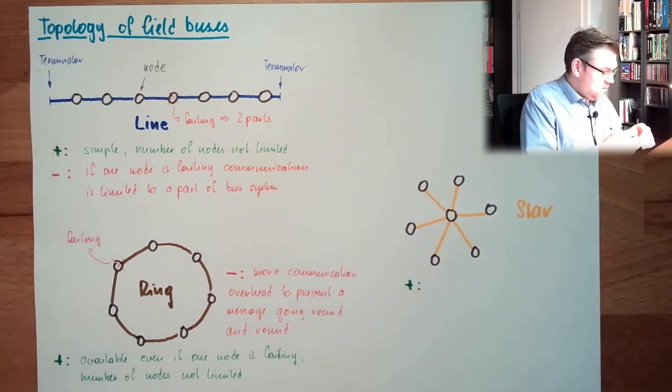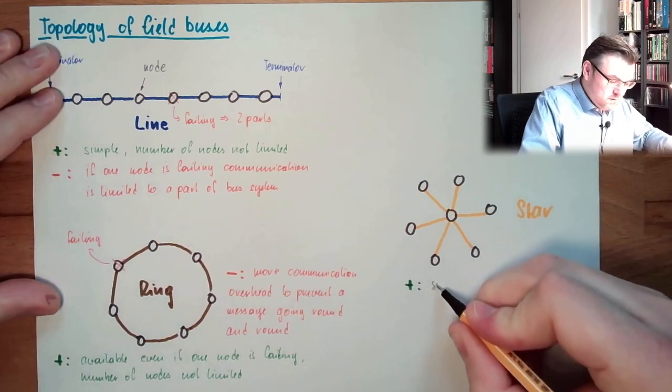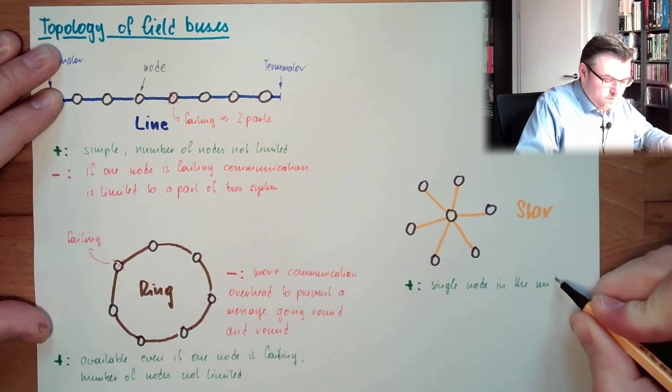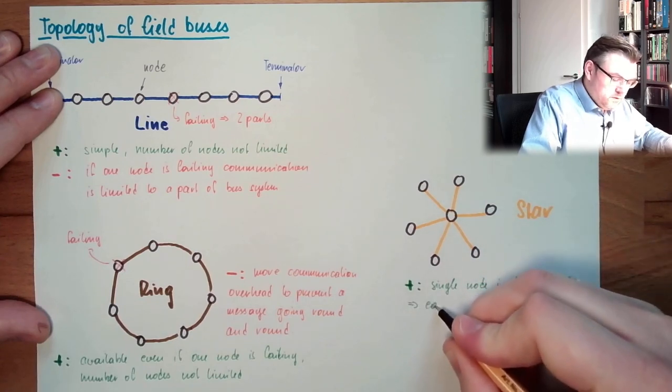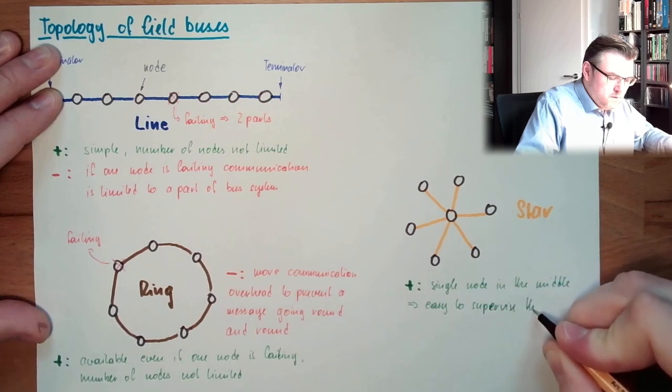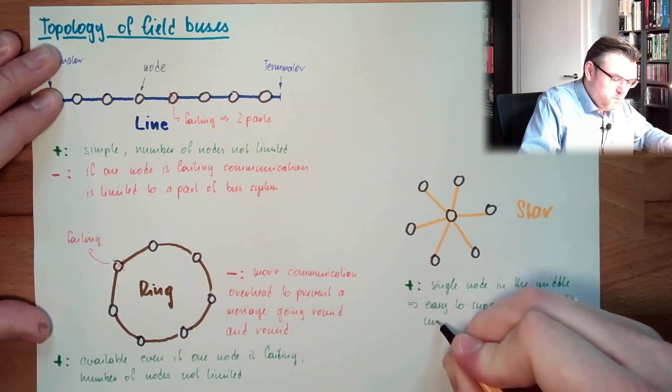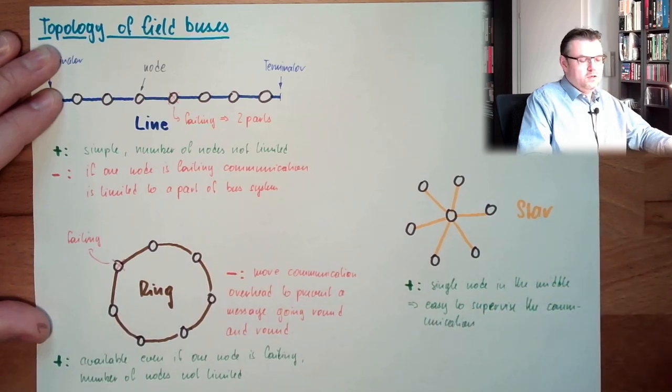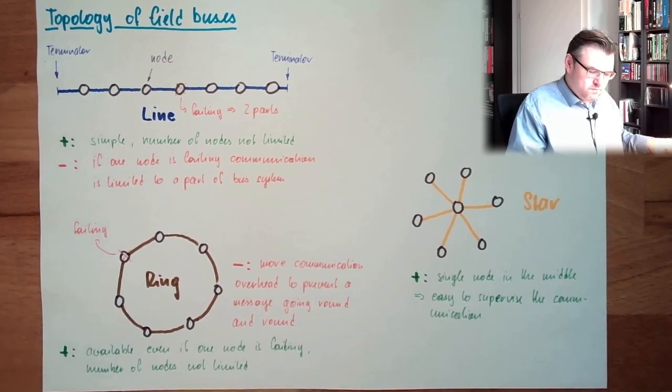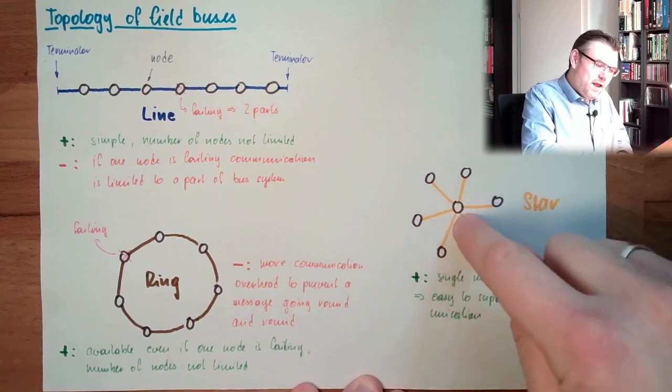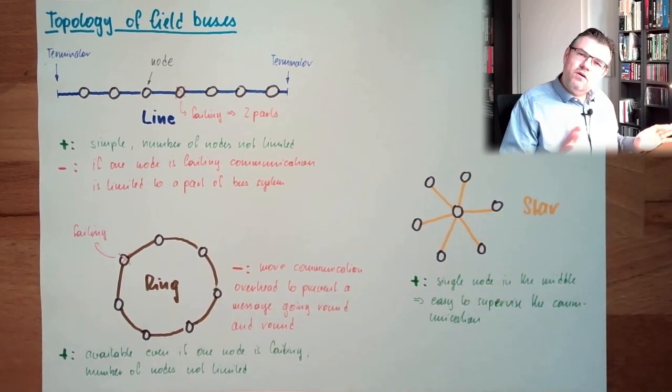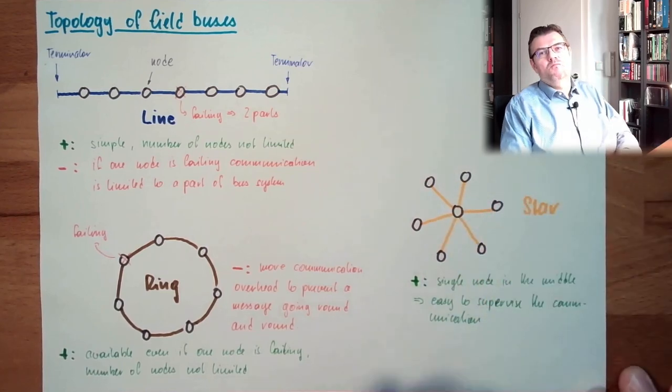Benefit. Single node in the middle. So, it's easy to supervise, analyze the communication. Make error analyzes. Supervise. That's it. I just have to sit in the middle, and I see whatever two parts are talking to each other. If one node is spamming the whole network or something like this, I can see it simply by looking at the middle node.